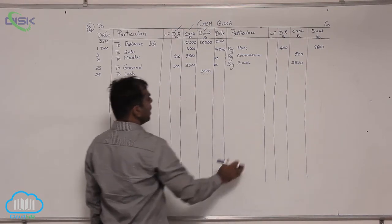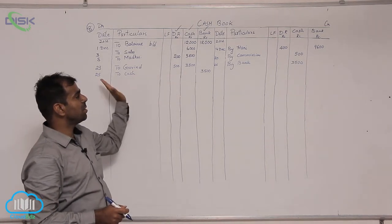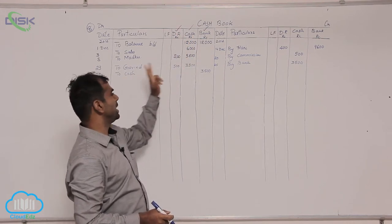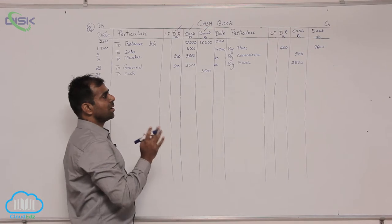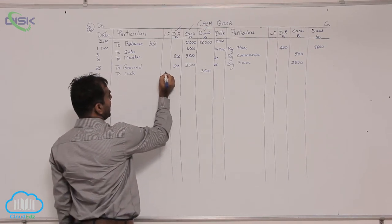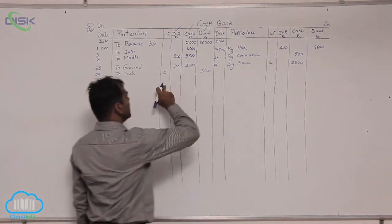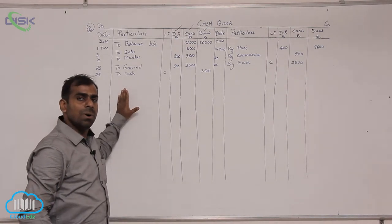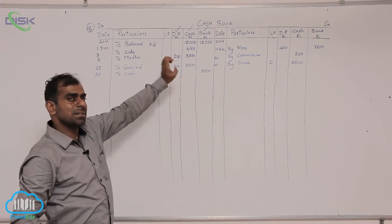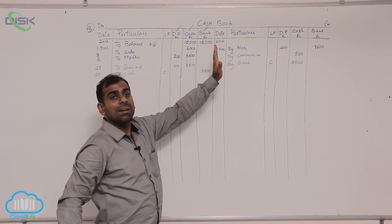On 25th you are entering the amount related to one transaction on both sides because you have the columns of the accounts getting affected on both sides. This is called a contra entry. Since it is a contra entry, in the LF column you write the letter C on both sides. It indicates there will be no opening of any other ledger with reference to these amounts, as the cash book is both journal and ledger for cash and bank accounts.